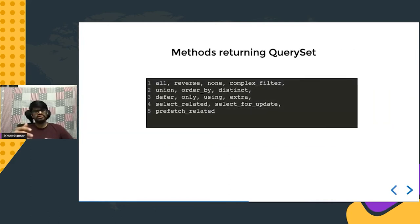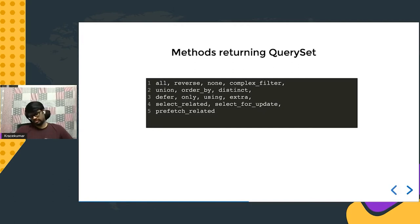Other Django model manager methods that also return a QuerySet include `all()`, `order_by()`, `union()`, and several others available on the object manager.